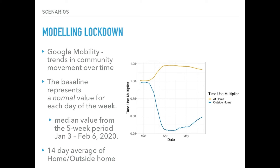To introduce lockdown into our model, we used Google mobility data, looking at trends in community movement over time. The data shows a clear, marked decrease in time spent outside starting just before the actual lockdown date, continuing during lockdown, and then increasing again as people began to come out of lockdown. The baseline represents a normal value for each day of the week — the median value for the five-week period January 3rd to February 6th, 2020.